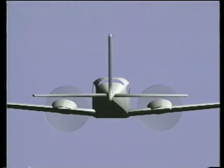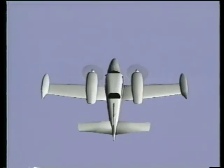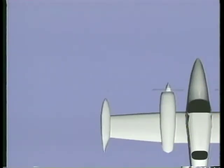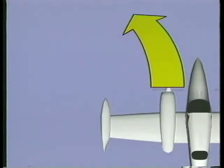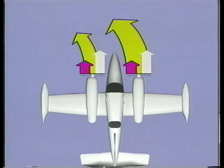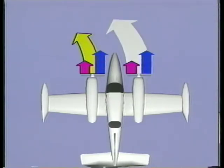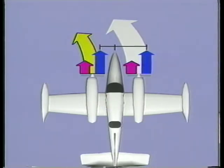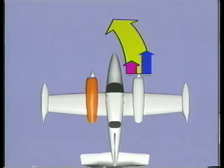P-factor is produced in the same way for twins as it is for single-engine airplanes, but its effects are greater. A left turning tendency is created at high angles of attack when the descending propeller blade produces more thrust than the ascending blade. This asymmetrical propeller loading causes an even greater yawing tendency in a twin-engine airplane because there are now two descending propeller blades. Also notice that the right engine exerts more of a yawing tendency than the left engine because its p-factor works farther from the centerline of the aircraft. In a conventional twin, failure of the left engine would produce a greater turning tendency than failure of the right engine.